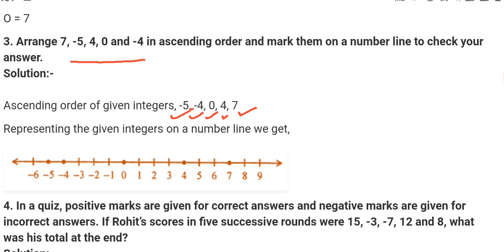So number line representation: first you can see here A point, this is A point. Here is minus 5. B point minus 4. Then C point 0. D point 4. And E point 7. So this is the number line. You can see we are moving from left to right, means this is the required ascending order. So ascending order here on the number line.